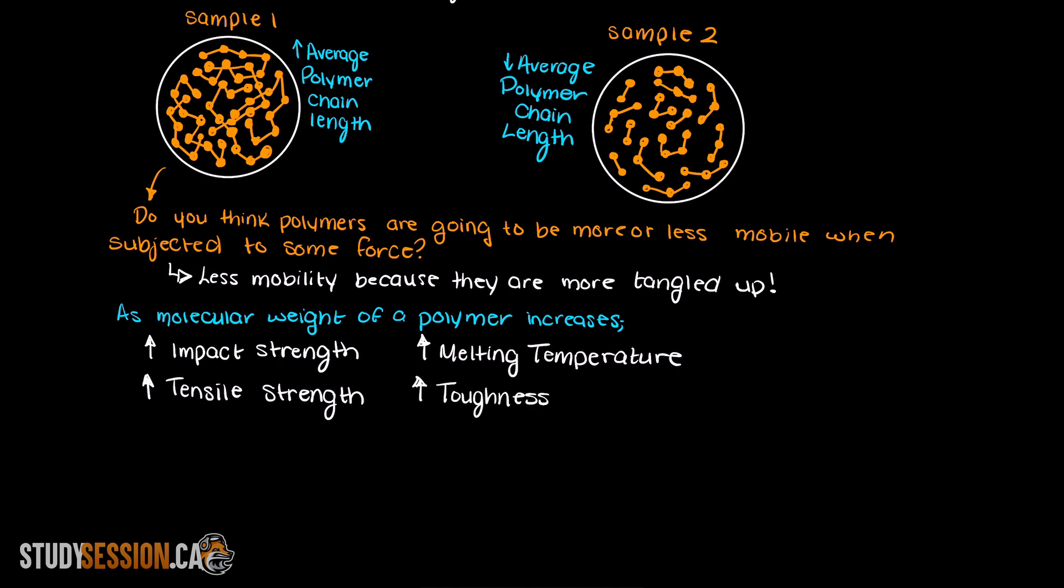The toughness of our polymer will also increase, which is the polymer's resistance to fracture and deformation. Another great property that is added by larger molecular weights is the creep resistance, which is a type of deformation that can occur over time when subjected to a consistent force.